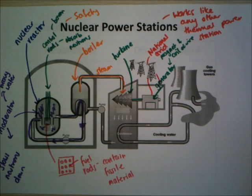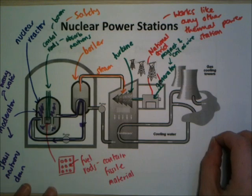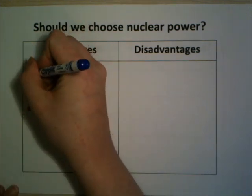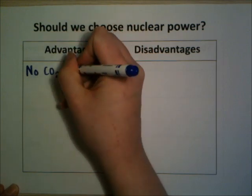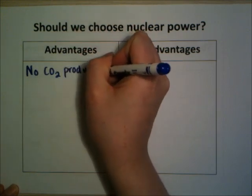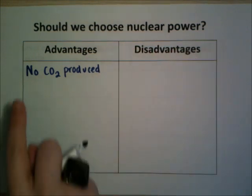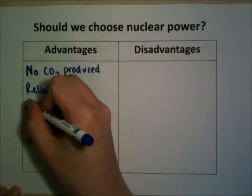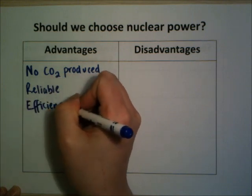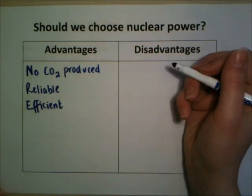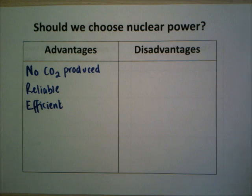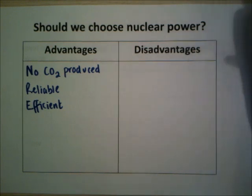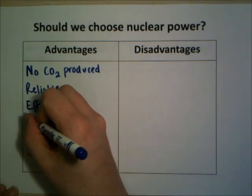So why use nuclear power? The main advantage people talk about is that no CO2 is produced, which means it doesn't contribute to the greenhouse effect. It's also really reliable and efficient — one small pellet of uranium, literally about this big, gives the same amount of heat energy as 800 kilograms of coal, because nuclear reactions release much more energy than chemical reactions like burning.